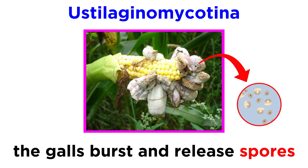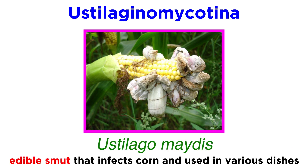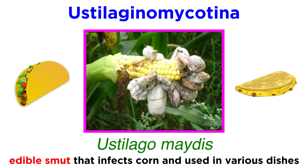These galls are full of spores and burst open when fully matured. Although many smuts cause issues for us, the corn smut, Eustilagomedis, is an edible smut that infects corn. It causes the kernels of corn to swell into galls. In Mexico, these galls from Eustilagomedis are used for fillings in tacos, quesadillas, and several other dishes.